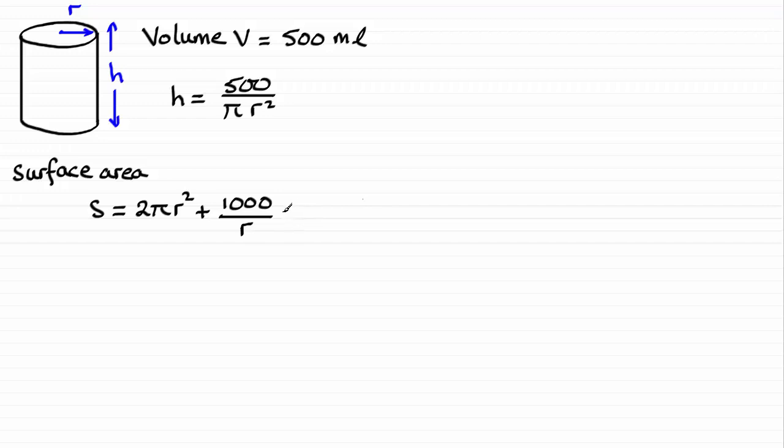Now in order to do this question, the method we're going to use is to differentiate this, find out ds by dr, equate it to zero which would give us a minimum, and solve it for r. Once I've solved it for r, I'm going to substitute it back into this equation here, which I'll call 1, and that will give me the value of h. Okay, so that's the method.